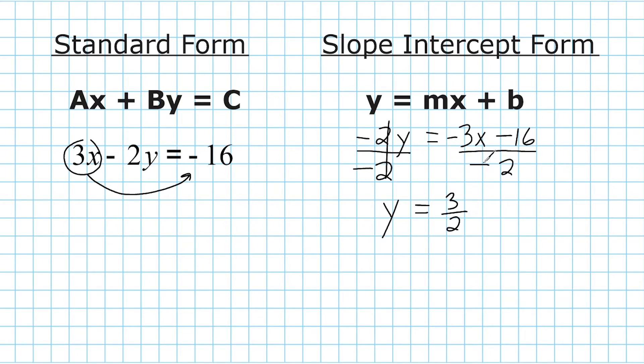And because we have two negatives here, we have to express this as a positive. And we take 3 halves and we multiply that by x. And now we have to take negative 16 and divide that by negative 2, which is positive 8. So this is the slope-intercept form of this equation right here. We converted something in standard form to slope-intercept form.